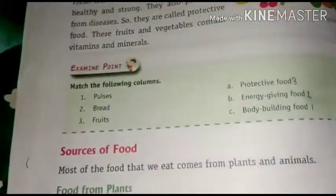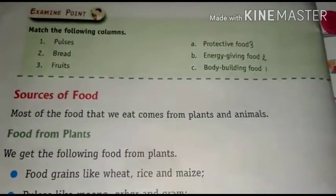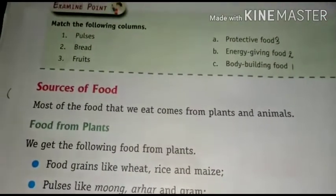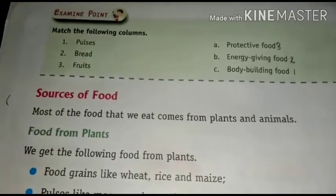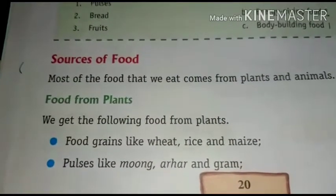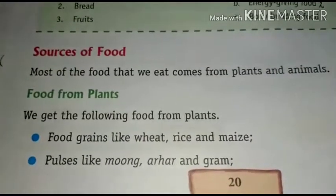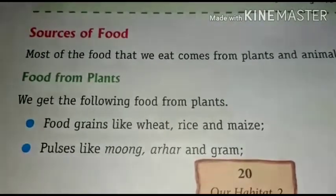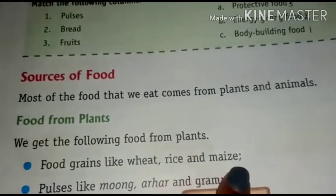Next is our sources of food. Most of the food that we eat comes from plants and animals — these are the main sources of our food. Now let's see what food we get from plants. We get food grains like wheat, rice, and maize from plants.